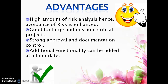Now let's go with the advantages of the spiral model. The spiral model has a high amount of risk analysis, and because of this, avoidance of risk is enhanced. As mentioned earlier, this model is good for large and mission-critical projects. We also have strong approval and documentation control. Finally, additional functionality can be added at a later date — that means if we have any other requirements to be added into the project, they can be added in the later iterations of the process.